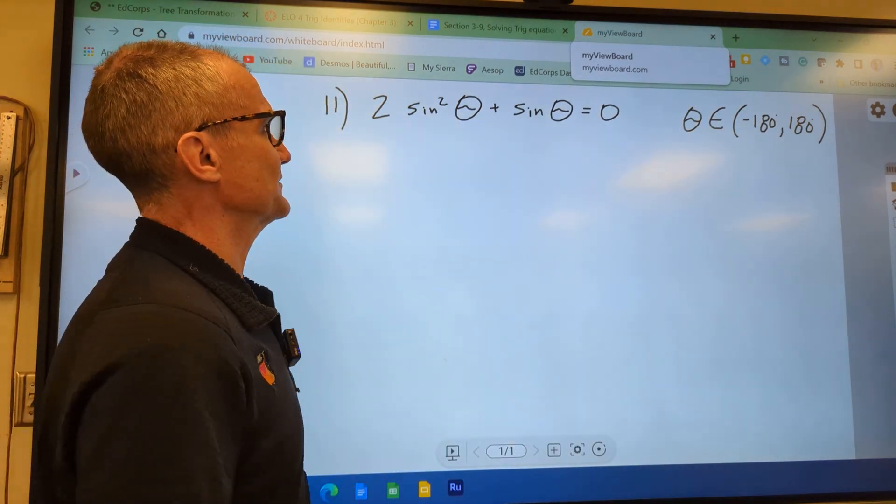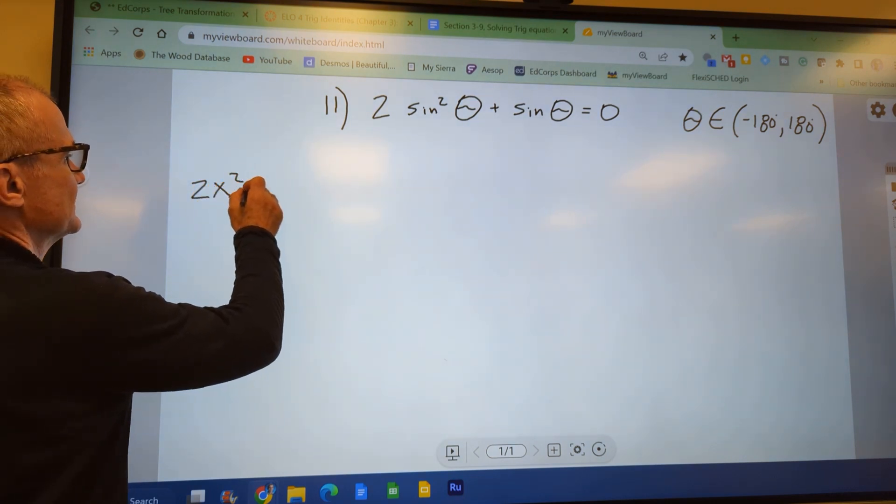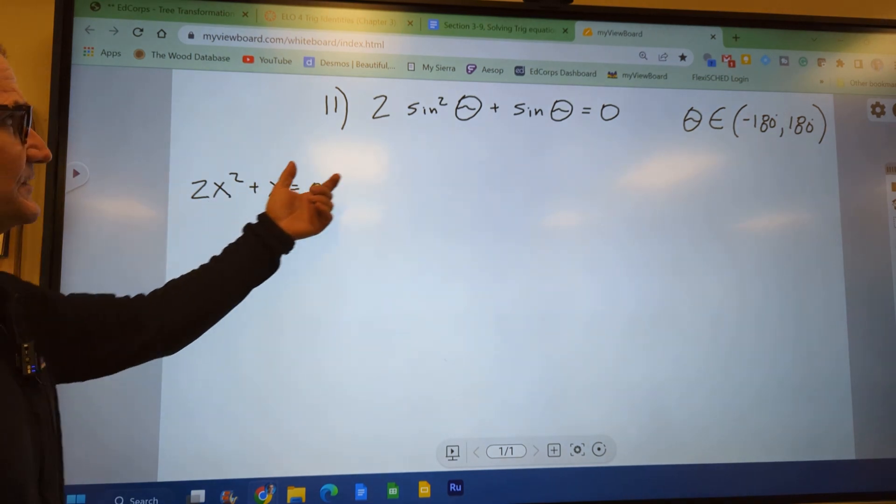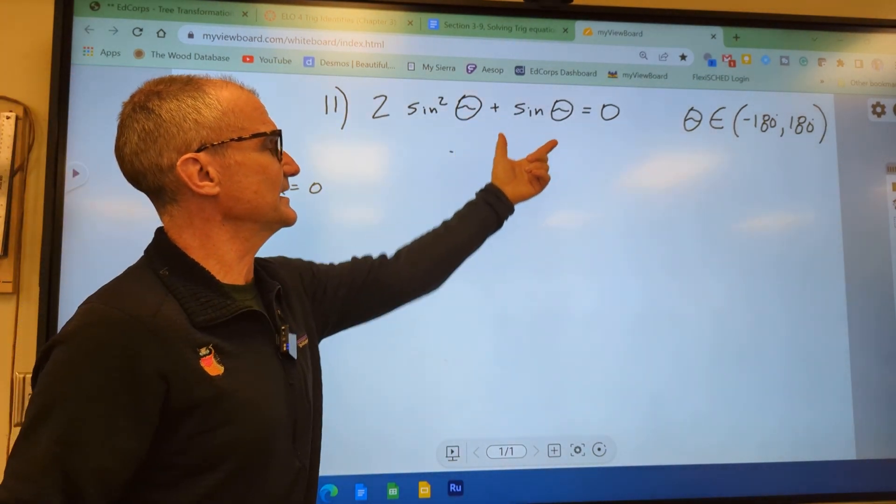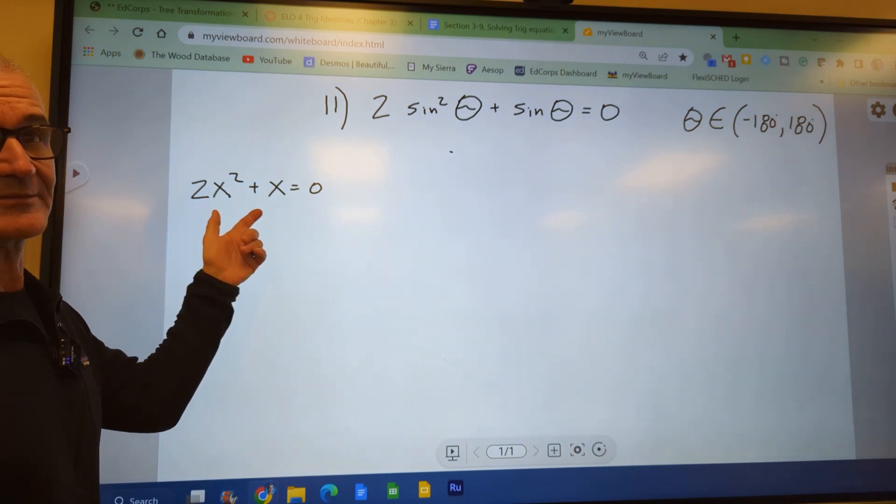So going back a step, if I were in algebra, this would look something like 2x squared plus x equals 0. This would be the x squared. That would be the x. And then in this algebra equation, I would factor out the common term.